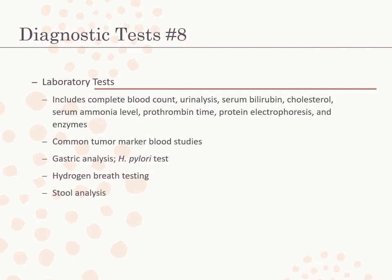Laboratory tests depending on the suspected or confirmed diagnosis may include a CBC, urinalysis, serum bilirubin, cholesterol, serum ammonia level, prothrombin time, protein electrophoresis, and enzymes such as amylase, lipase, aspartate aminotransferase, and lactate dehydrogenase. Common tumor marker blood studies include carcinoembryonic antigen and alpha-fetoprotein.